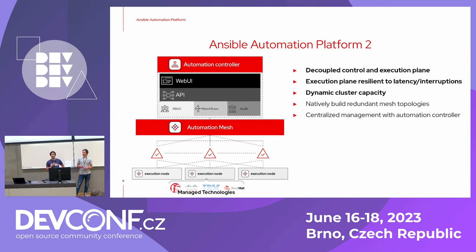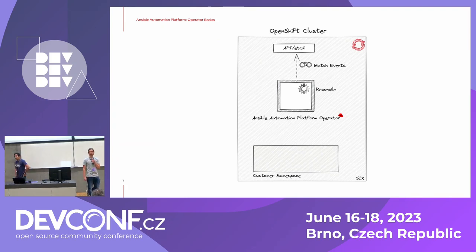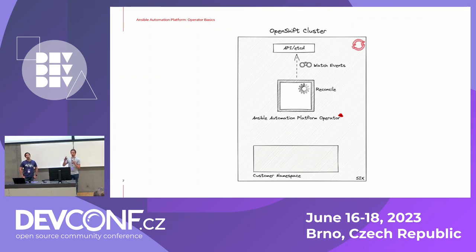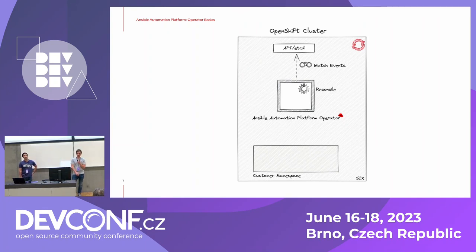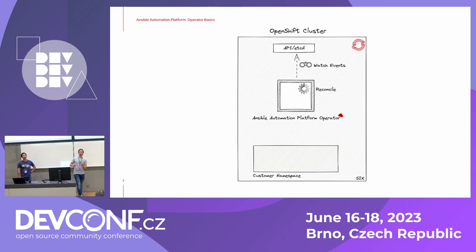First, we need to explain what is a Kubernetes operator. So here we see a normal OpenShift cluster, and on top, you see the API and etcd. The etcd is where OpenShift stores all the state from the running applications. An operator is a piece of software running in a container which you use to automate tasks. In the middle of this picture, you see as an example the Ansible Automation Platform operator. This operator has so-called reconciliation loops — it constantly watches the state of the etcd, and when something changes in etcd, it will apply the changes to the cluster.